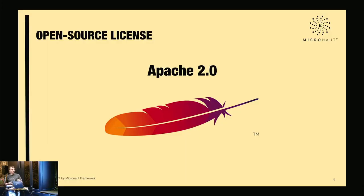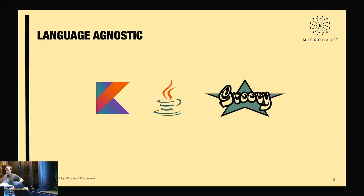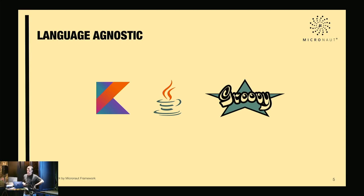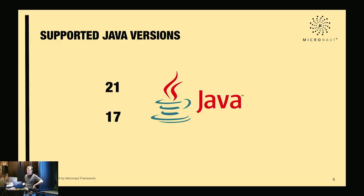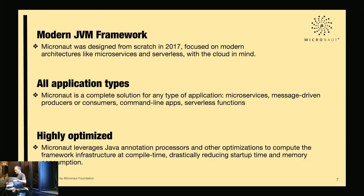We are at the GR8Conf community conference. Micronaut is Apache 2 licensed and it's a JVM framework — you can write your applications with Java, Kotlin, or Groovy. We support Java 21 and Java 17; Java 17 is the baseline of Micronaut 4, which is the latest major version of the framework.